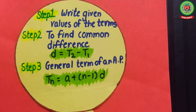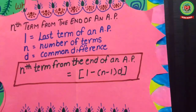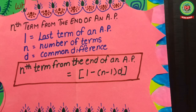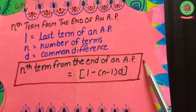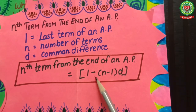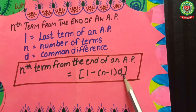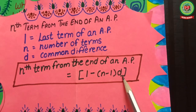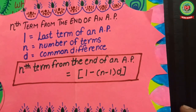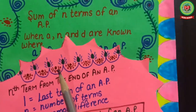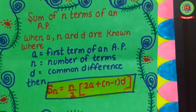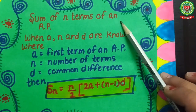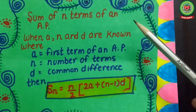The second type we have done is how to find the Nth term from the end of an AP. The formula for the Nth term from the end is: l − (n−1) × d, where l stands for the last term, n stands for the number of terms, and d stands for the common difference. Now today we will continue with a new topic: the sum of N terms of an AP.